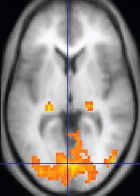Magnetic resonance imaging is a medical imaging technique used in radiology to form pictures of the anatomy and the physiological processes of the body in both health and disease. MRI scanners use strong magnetic fields, magnetic field gradients, and radio waves to generate images of the organs in the body. MRI does not involve X-rays or the use of ionizing radiation, which distinguishes it from CT or CAT scans and PET scans.